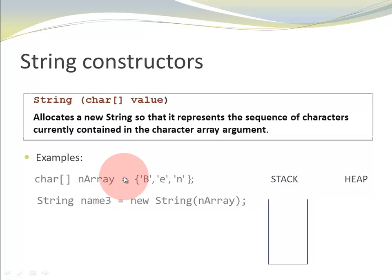And it includes the characters b, e, n. And then I declare a variable name 3 and I create a new String with a new operator and a constructor. And I pass my character array as an argument, so I want to create a String based on this character array.